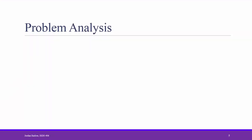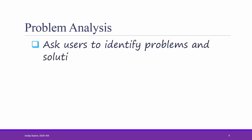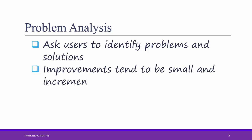The first strategy is problem analysis. In this strategy, the analyst asks users to identify problems and solutions. The improvements tend to be small and incremental. For example, the analyst could interview a manager at the bank and ask, what are the problems in the current business process?